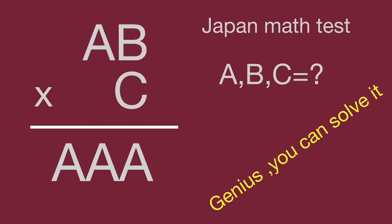These questions come from Japan Maths test. AB times C equal to AAA. ABC are different digits from 0 to 9, but A is not equal to 0. Find the digit for ABC. Would you please to find it? Pause the video and try it while you are ready. Keep watching the video to get the result.